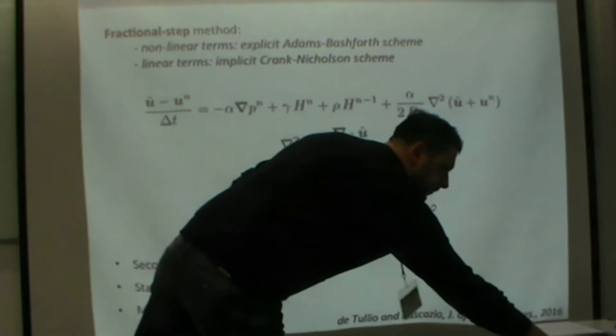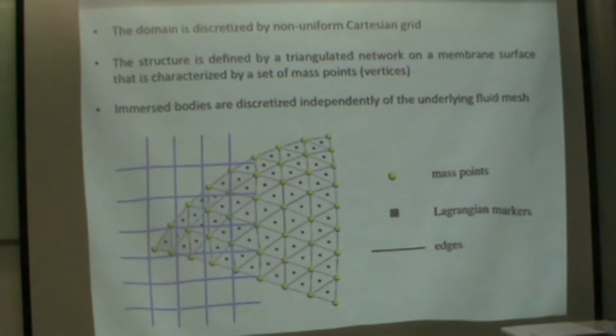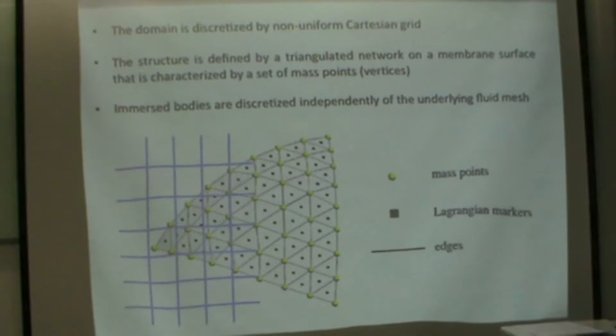About the bodies, since we have this Cartesian mesh, we're relying on immersed boundary technique to impose the boundary conditions. The idea is to discretize the surface of our membranes or deformable bodies with triangles. We collect the mass of the entire structure on the nodes of the triangles. We consider the centroids of the triangles like Lagrangian markers where we want to impose the boundary conditions, and then we have the edges to build the structural response. Immersed bodies are discretized independently, so we can have Lagrangian mesh resolution and Eulerian mesh resolution that can be independent, with some restrictions.